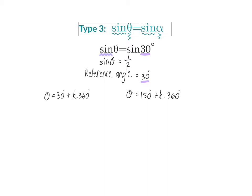So when the trig function is the same on both sides, that angle that is given — whether it's a constant or a variable — can immediately be used as your reference angle. Let's look at an example where that angle is a variable.